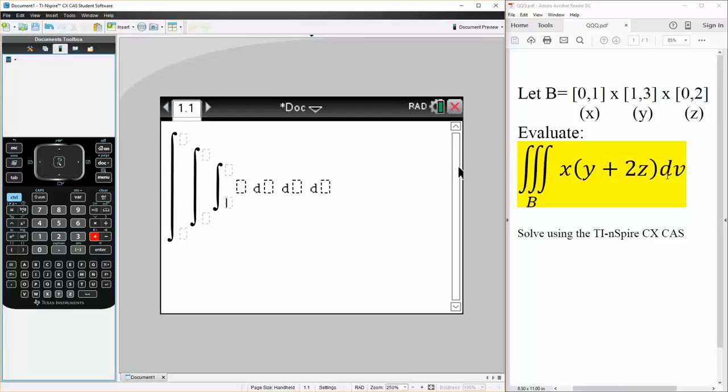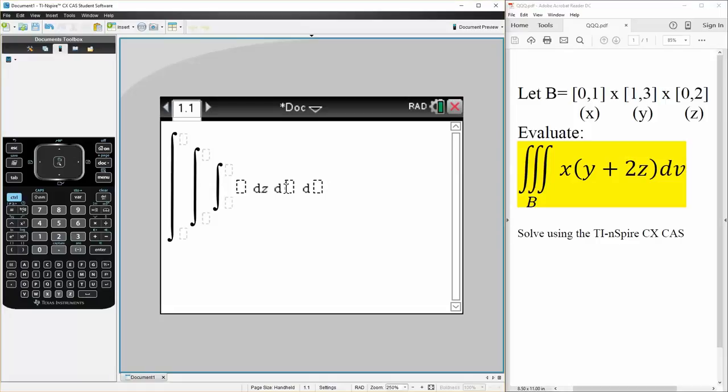And now we have the option. The way we'll set it up will be, I mean, I'm just going to choose DZ, DY, DX, and I know that DZ corresponds to 0, 2, so 0, 2, and I know DY corresponds to 1, 3, and DX corresponds to 0, 1.